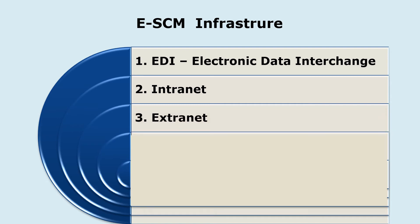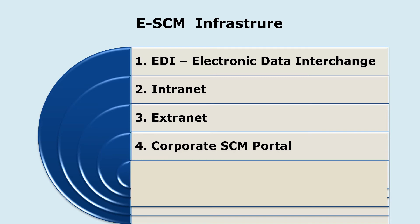The next one is extranet, required for communication with external agencies like logistics or customers. After that is the corporate supply chain management portal, which provides better, relevant, and updated information on supply chain activities, and acts as a platform for both buyers and sellers to connect and exchange data.